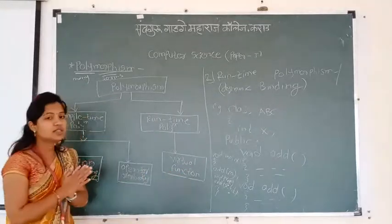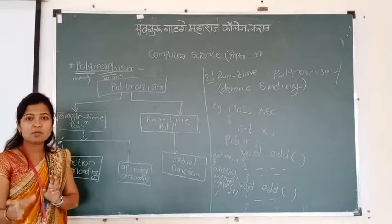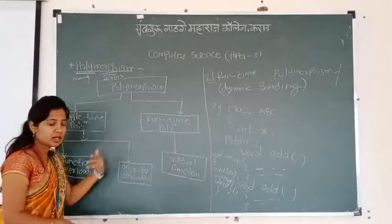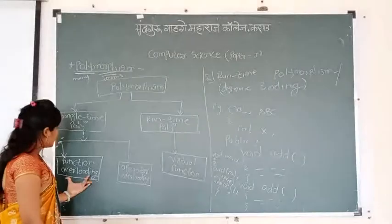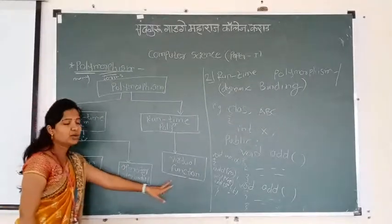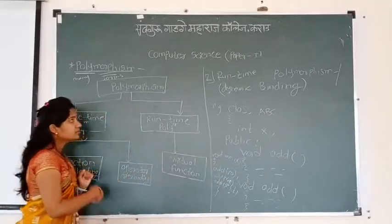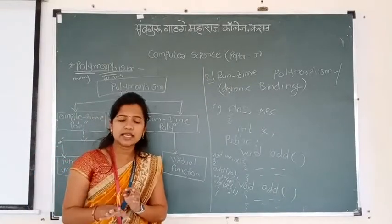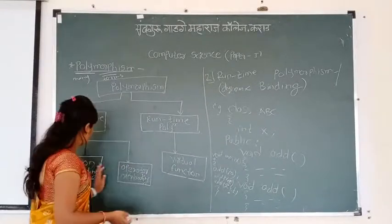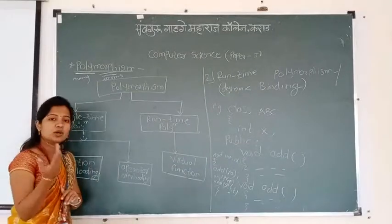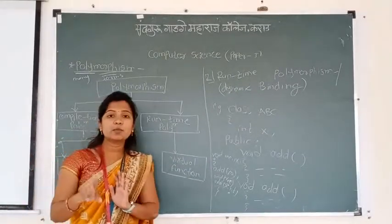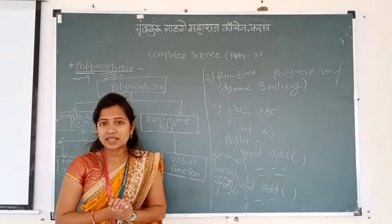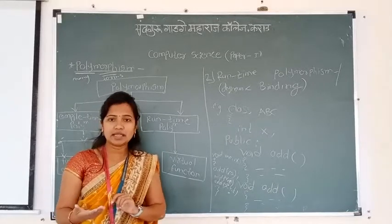Today we saw that polymorphism means one name, multiple forms, with two types: compile time and runtime. Compile time uses function overloading and operator overloading; runtime uses virtual functions. Today we only covered the theory. In the next video lecture, we will see function overloading, operator overloading, and virtual functions with programs. Thank you.